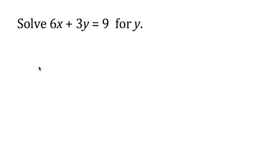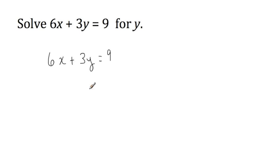Let's consider this first example. We want to solve 6x plus 3y equals 9 for y. We're going to use the steps that we have for solving an equation. This time, there are two variables in the equation. So when we talk about the variable that we're trying to get alone, that would be the variable we're trying to solve for — in this case, y.